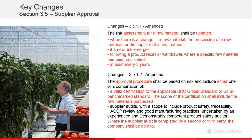Clause 3.1.1, the first change in supplier approval, has been amended. The risk assessment for a raw material shall be updated when there's a change in the raw material, its processing, or the supplier. The risk assessment needs to be repeated if a new risk emerges — for instance, if there has been a recall on a certain raw material. Following a product recall or withdrawal where a specific raw material has been implicated, and at least every three years, the risk assessment for raw materials and their associated suppliers must be reviewed.